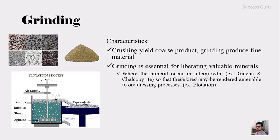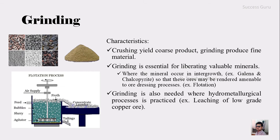For such separation, we go for grinding because crushing cannot separate these two things. When you grind, the valuable mineral as well as the gangue mineral will become finer, and after that we can go for froth flotation, magnetic separation, or other methods to separate the valuable fine material from the gangue. Grinding is also needed in hydrometallurgical processes — for example, for leaching to separate low-grade copper ore, crushing alone is not sufficient.